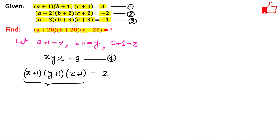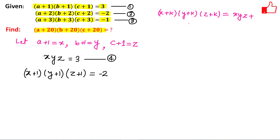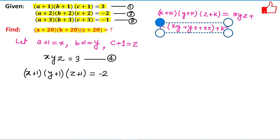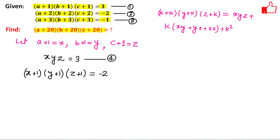We can multiply these three terms and expand. There is a result we can use: (x+k)(y+k)(z+k) can be expanded to xyz + k(xy + yz + xz) + k²(x + y + z) + k³.